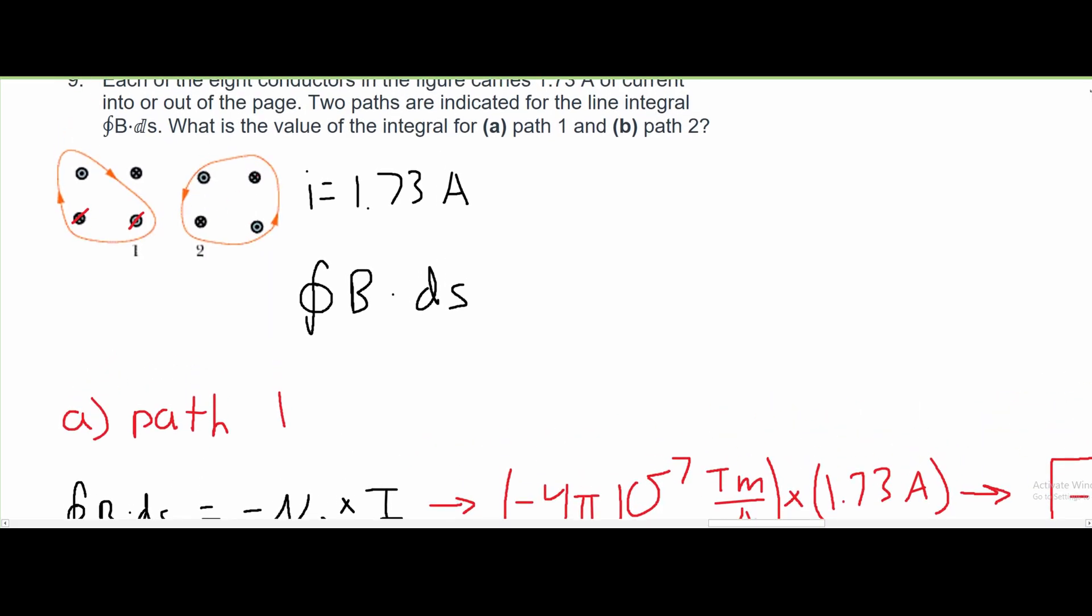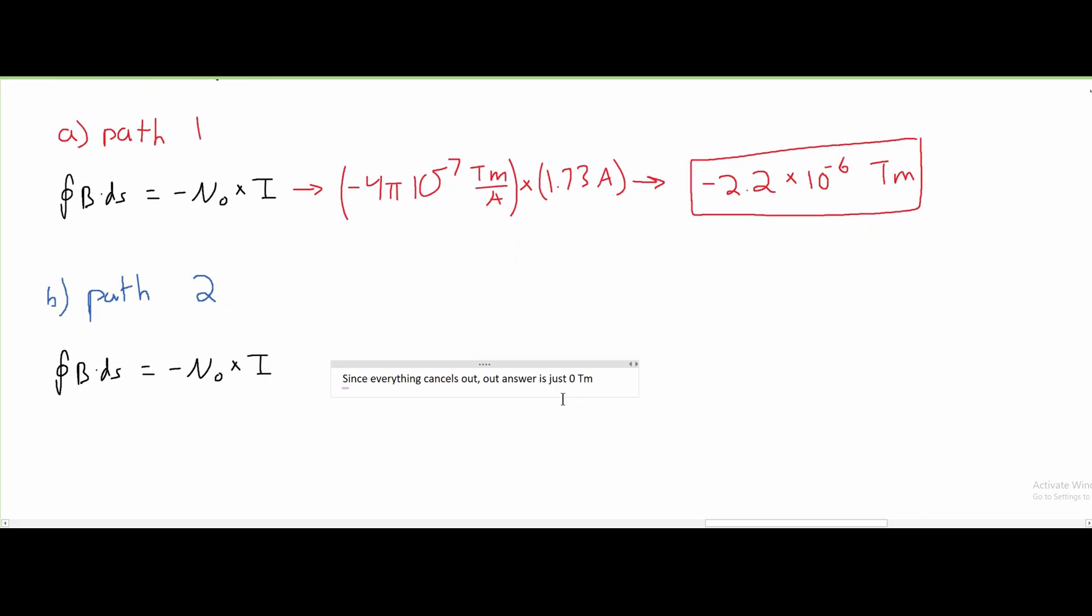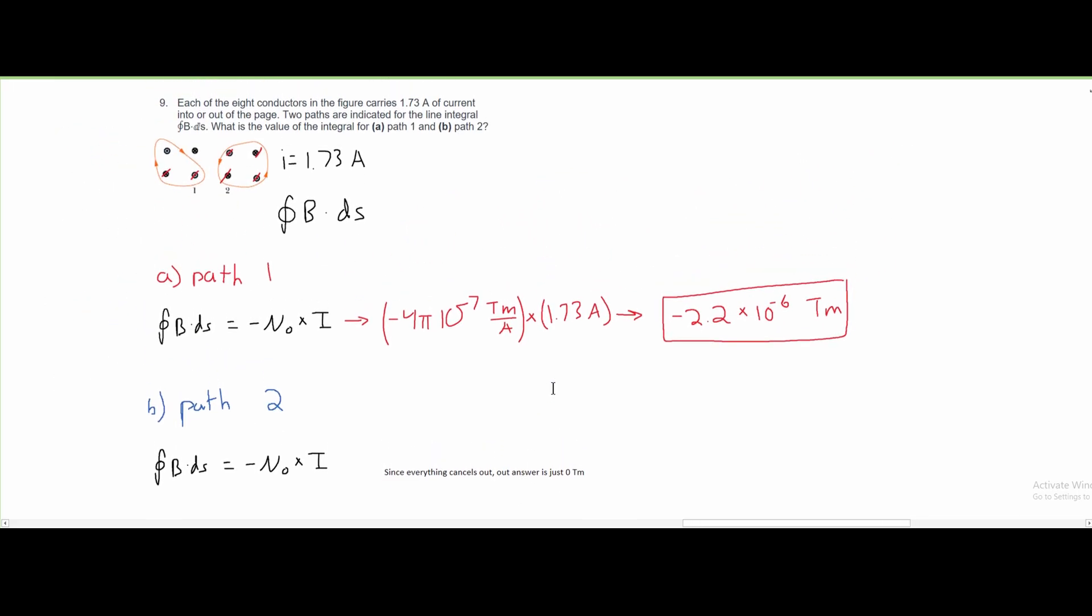We notice that we have two in the same direction and two in the opposite direction. So these are going to cancel out, but everything is going to cancel out. So since everything cancels, our answer is just going to be zero tesla meters.